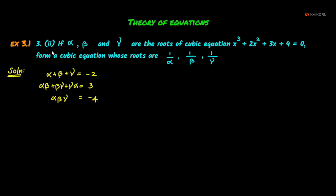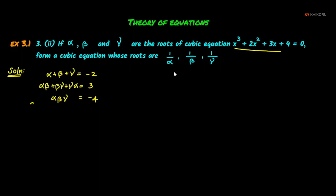Exercise 3.1, third question, second sub-question. If alpha, beta, and gamma are the roots of the cubic equation x³ + 2x² + 3x + 4 = 0, form a cubic equation whose roots are 1/alpha, 1/beta, and 1/gamma. We compare with the general equation to find the values of alpha + beta + gamma, then multiply and equate.